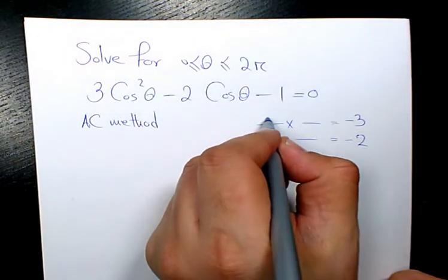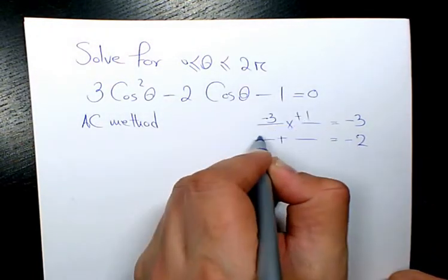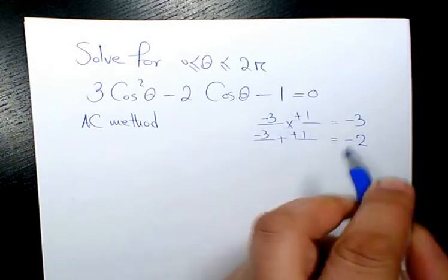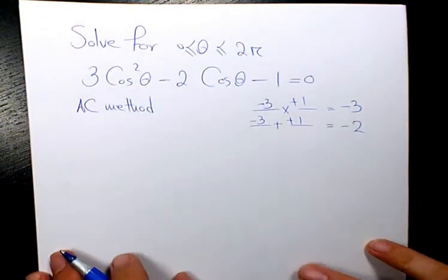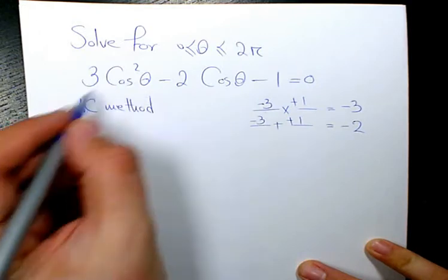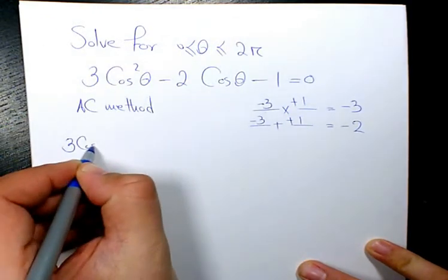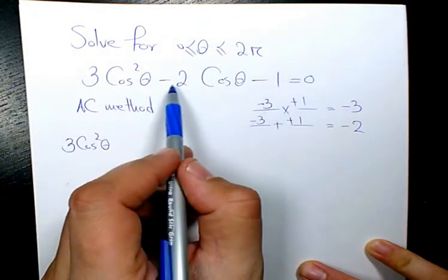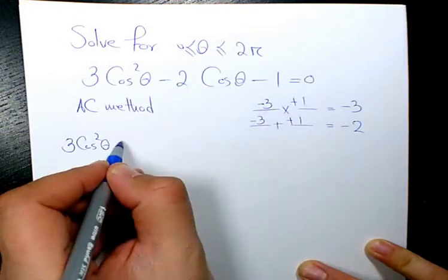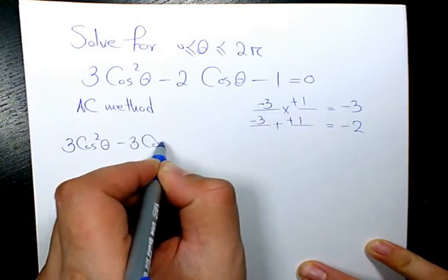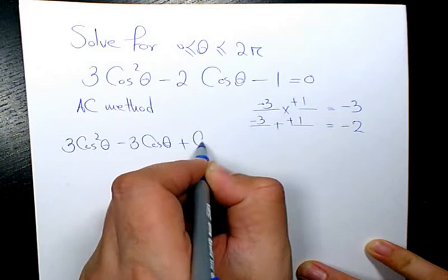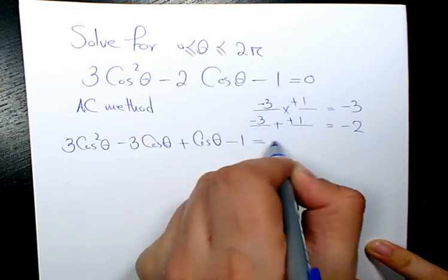So that will be negative 3 and positive 1, because when you multiply them it's negative 3, when you add them it's negative 2. Therefore, I'm going to rearrange it: 3 cosine squared theta, instead of negative 2 cosine theta, I will write negative 3 cosine theta plus cosine theta minus 1 equals 0.